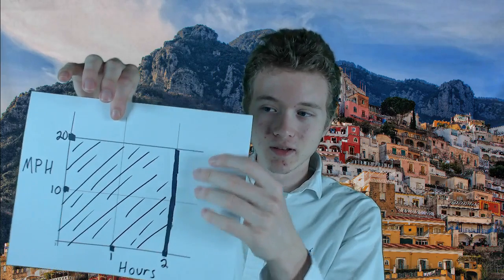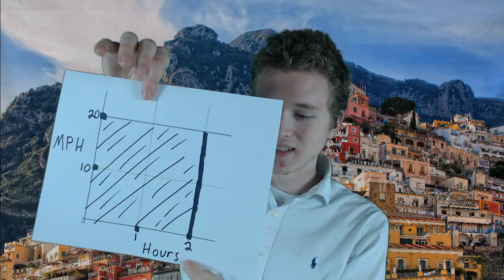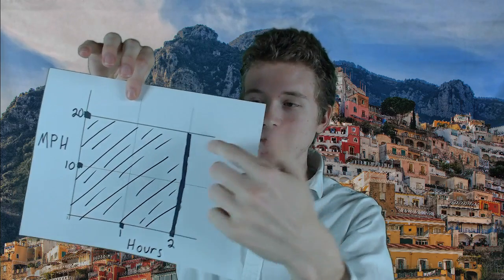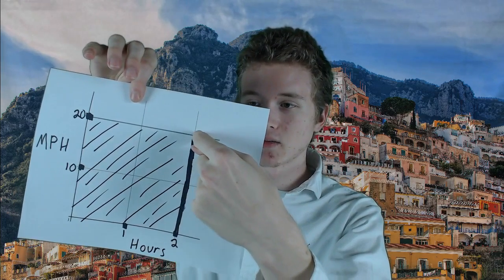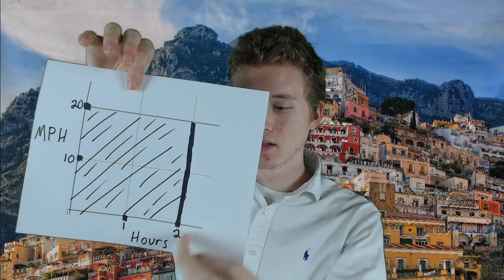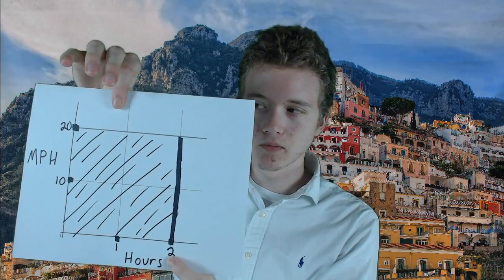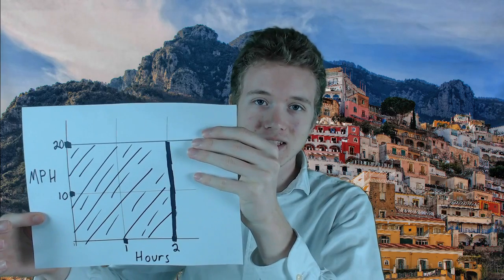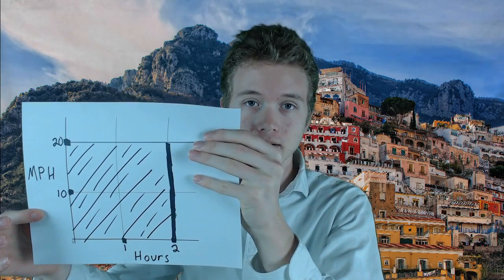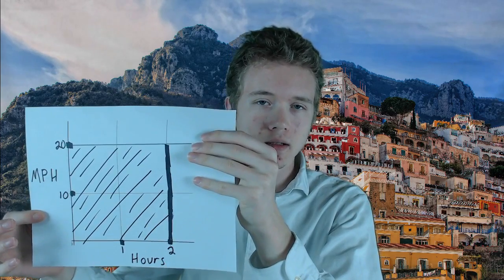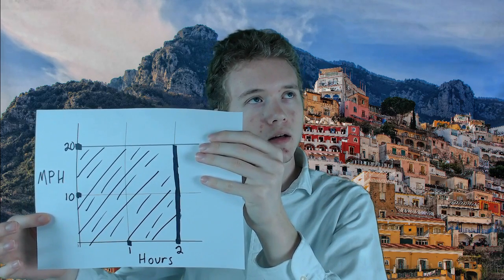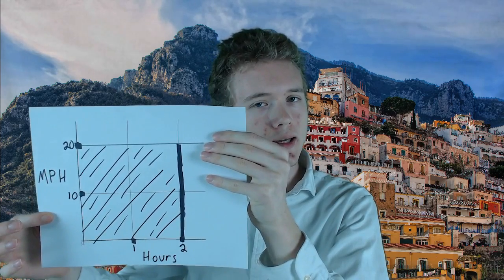So here we have a rectangle with the number of hours along the bottom and the number of miles per hour on the side. And all I've done is put a vertical line at the number of hours. And so when you multiply the two on the base of the rectangle times the 20 on the height of the rectangle, you get a total of 40. What this means is that the area of the rectangle is our answer.